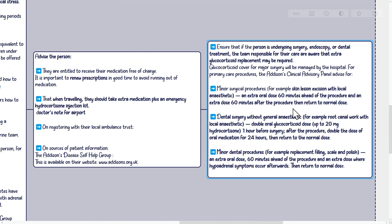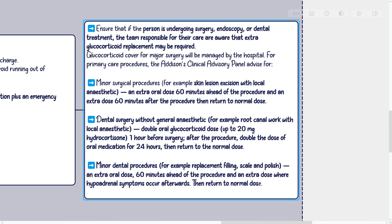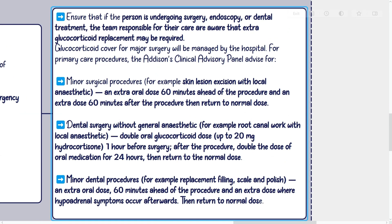Ensure that if the person is undergoing surgery, endoscopy, or dental treatment, the team responsible for their care are aware that extra glucocorticoid replacement may be required. The Addison's Clinical Advisory Panel advises: for minor surgical procedures with local anesthetic, give an extra oral dose 60 minutes before and after the procedure, then return to normal. For dental surgery without general anesthetic (e.g., root canal with local anesthetic), double the oral glucocorticoid dose up to 20 mg hydrocortisone one hour before surgery, then double the dose for 24 hours afterwards. For minor dental procedures (e.g., replacement filling, scale and polish), give an extra oral dose 60 minutes ahead of the procedure and an extra dose if hypoadrenal symptoms occur, then return to normal.